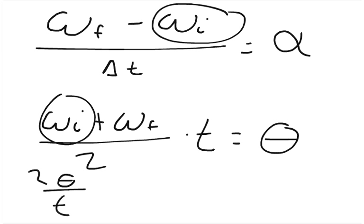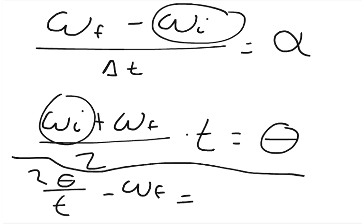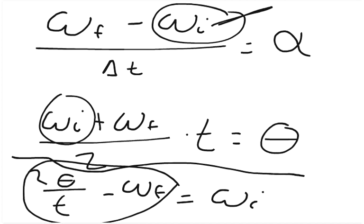So 2 times the angular displacement over t minus the final angular velocity, or angular speed. And this is going to equal the initial angular speed. So then we can plug this answer right here in for initial angular speed.